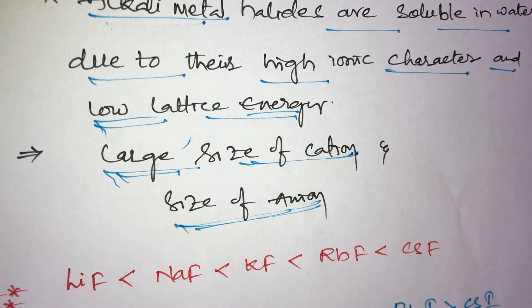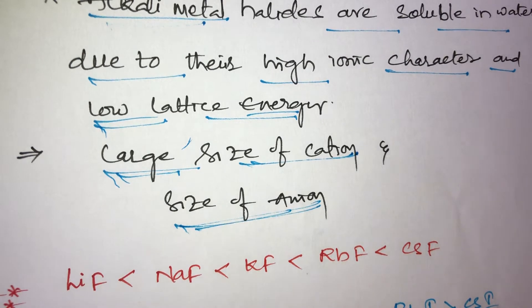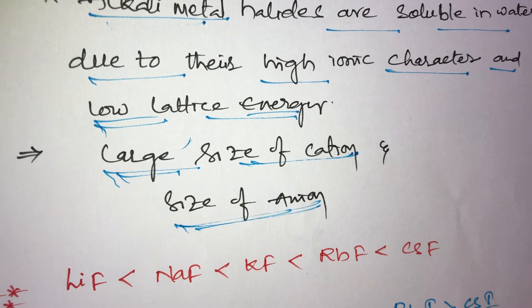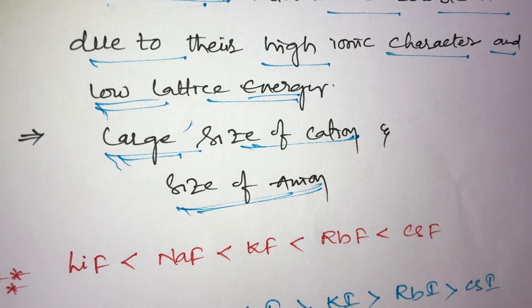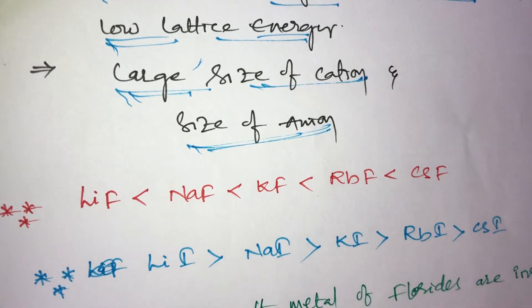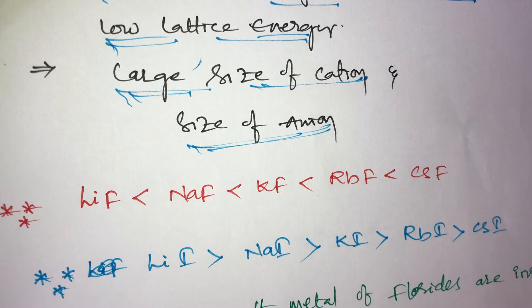This is the solubility order — solubility of metal halides depends on large size of cation and anion. For example, in fluorides: lithium fluoride, sodium fluoride, potassium fluoride, rubidium fluoride, and cesium fluoride.